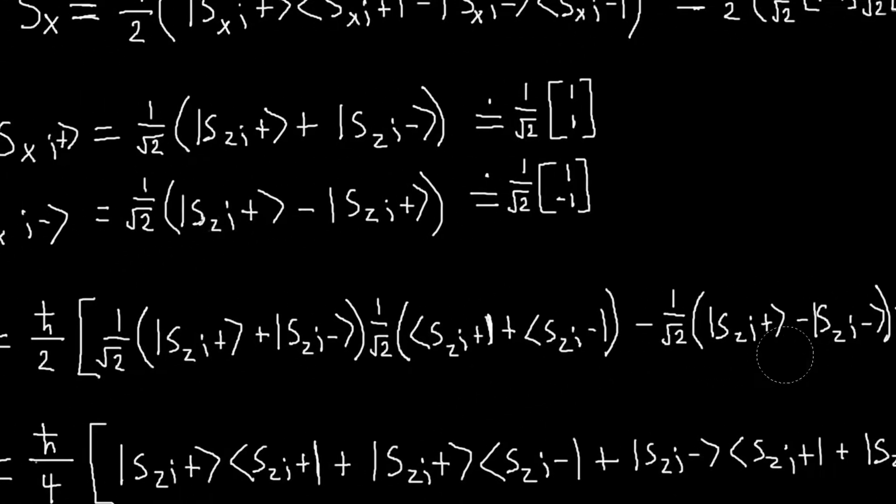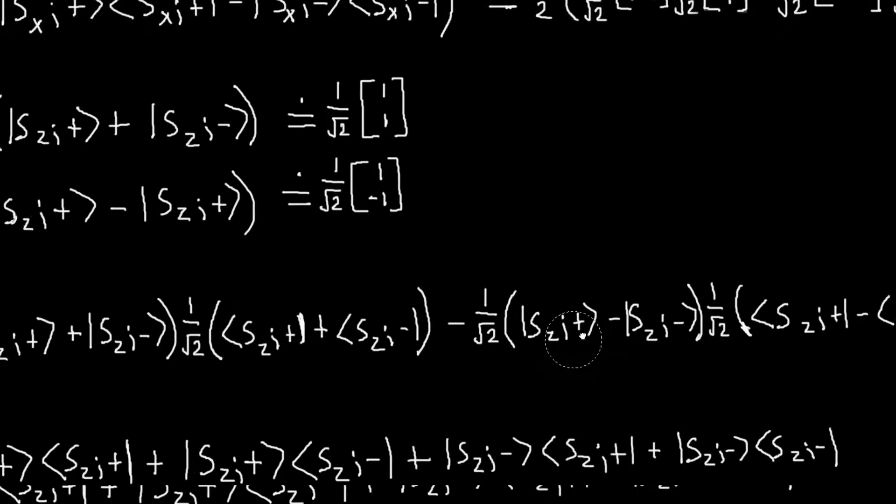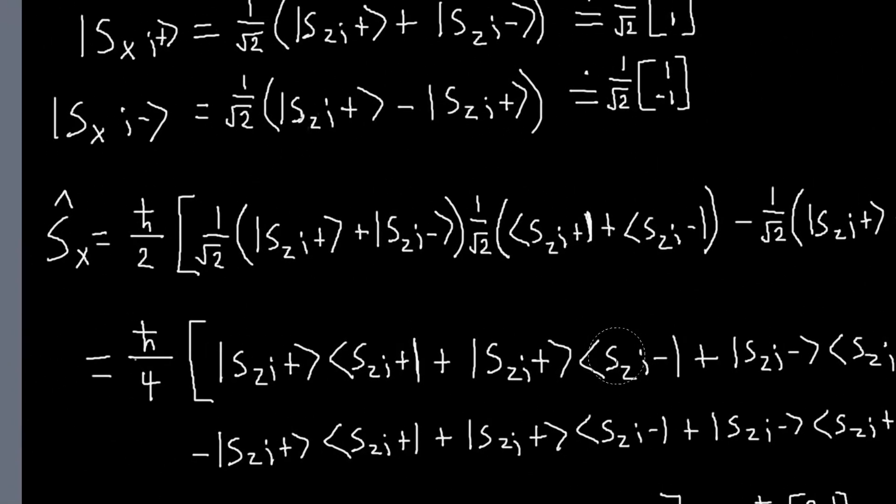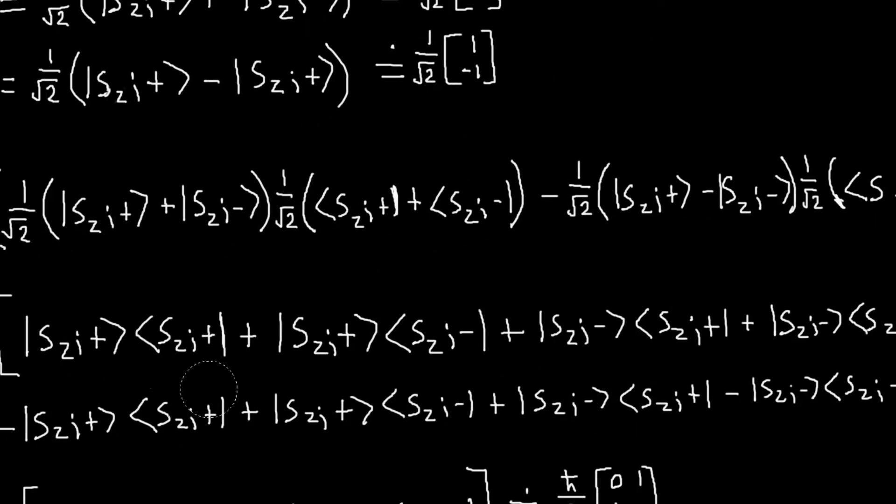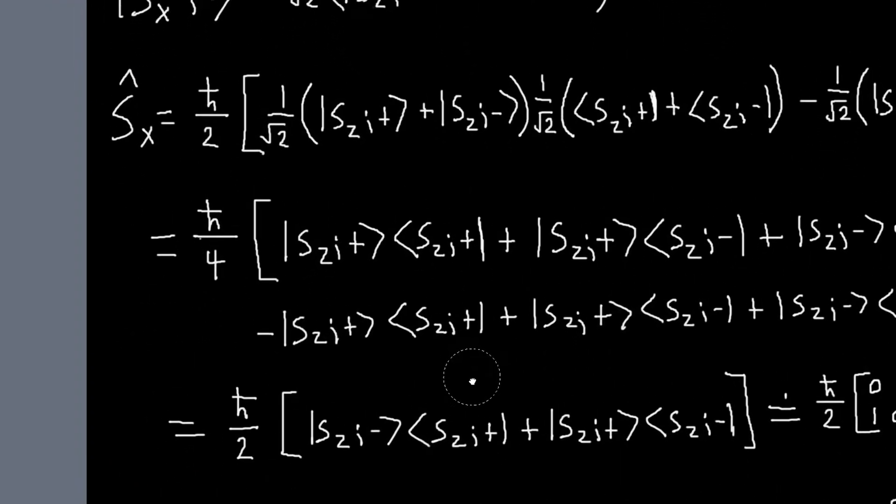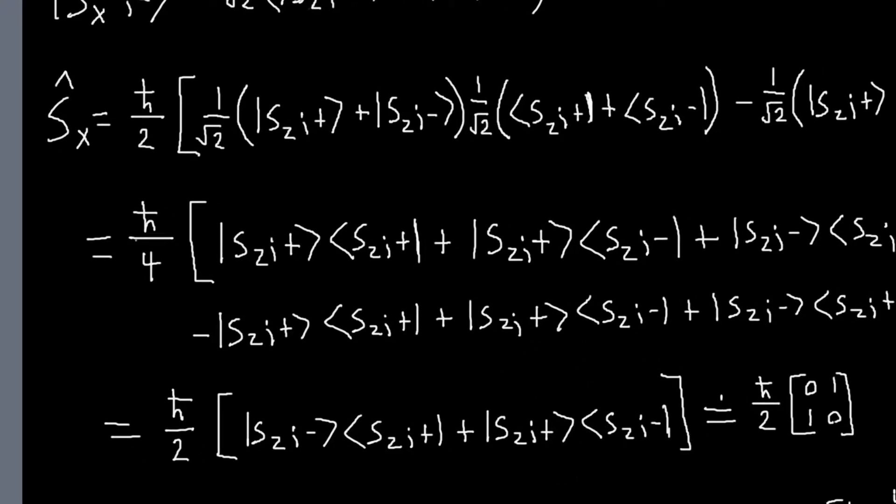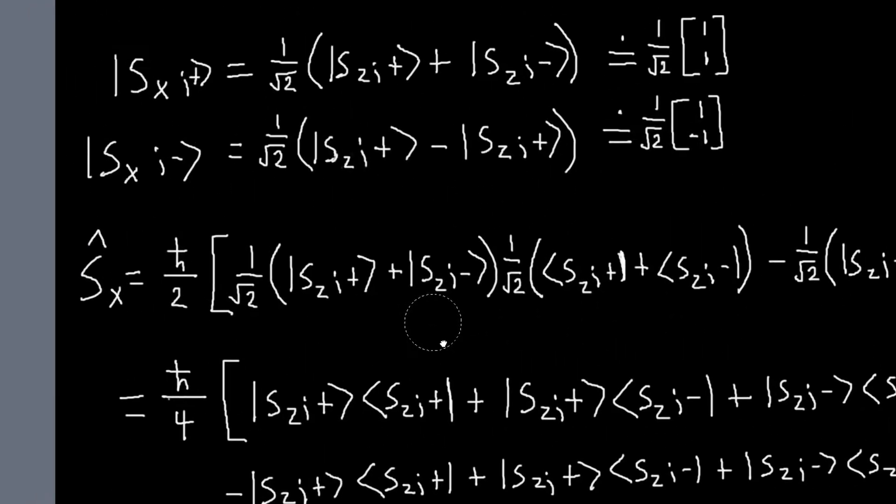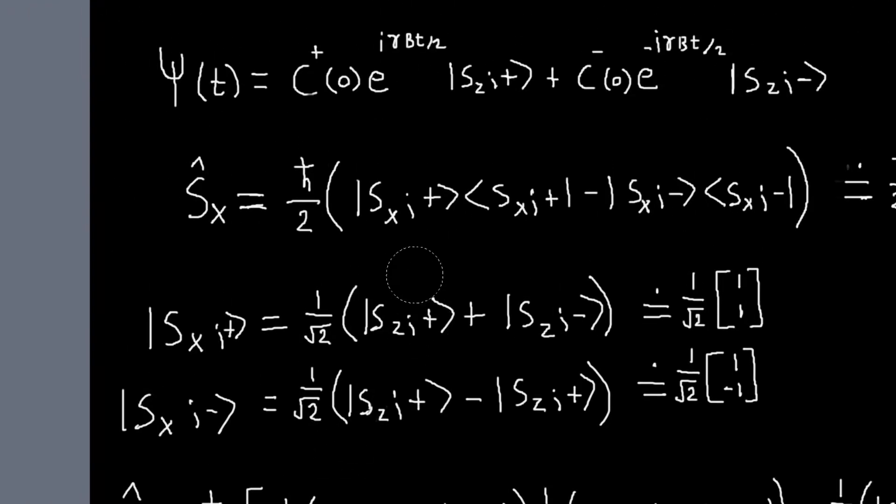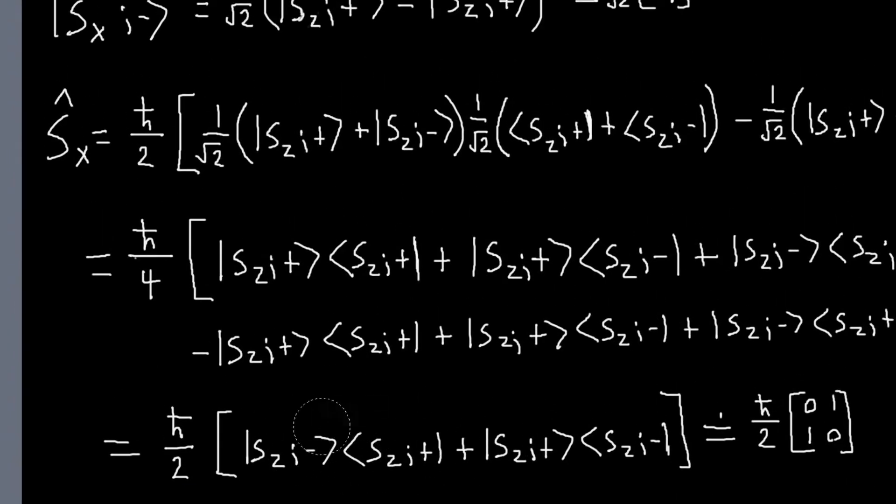And then you foil both of these terms out, so you get a total of eight terms of outer products, and some terms cancel, and other terms add, and what you end up with is it reduces to this, which I can represent in matrix form, like this. So what I've done is I've taken my operator, which was originally expressed in my Sx basis, and rewritten it to express it in terms of my Sz basis.